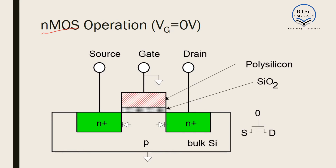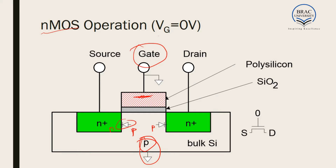Now let us look at how the MOSFET operates. We are considering NMOS operation first. When VG is zero — that is, the gate voltage is zero — there is no voltage on the gate plate. We consider that the body has been grounded. We can see that this P layer is grounded and the voltage across it is also zero. This is a P layer and the source/drain are N layers, so there is a diode at each junction. Since the P layer is grounded with the body, both diodes are reverse biased. Since they are reverse biased, no current flows in either direction. As a result, no current flows in the circuit and the MOSFET is turned off.